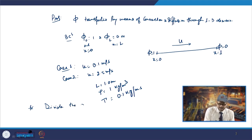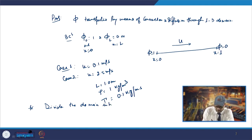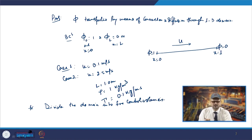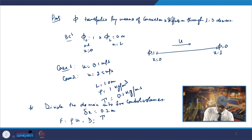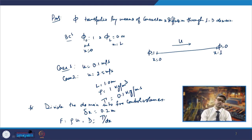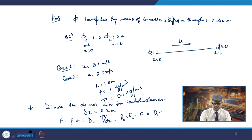We will divide the whole domain into 5 control volumes. With a length of 1 meter divided into 5 volumes, delta x becomes 1/5 = 0.2 m. Once you have delta x = 0.2 m, you can calculate other quantities: F = rho × u, D = tau / delta x. So F_e = F_w = F and D_e = D_w = D everywhere.